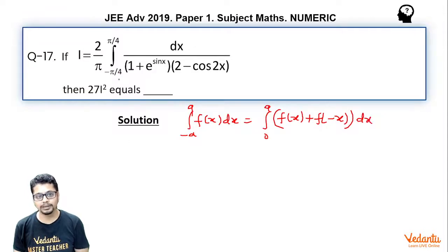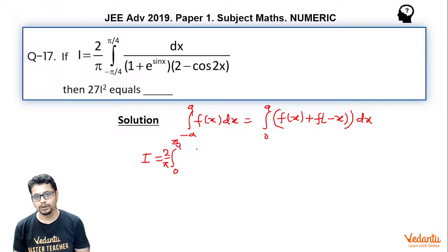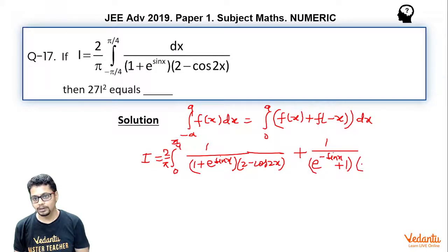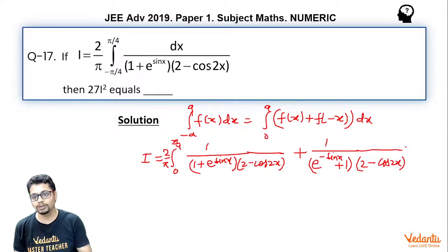Applying this property, I becomes 2/π times the integral from 0 to π/4 of f(x) + f(−x), where f(x) = 1/[(1 + e^(sin x))(2 − cos 2x)] and f(−x) = 1/[(e^(−sin x) + 1)(2 − cos(−2x))]. Since cos(−θ) = cos θ, the cos 2x term remains unchanged.